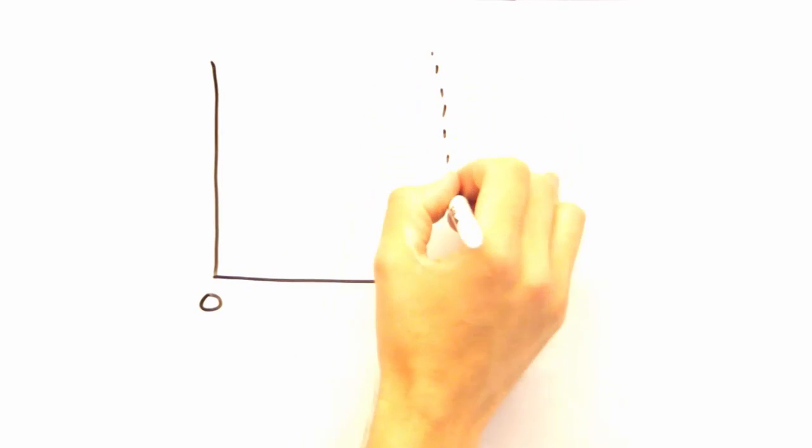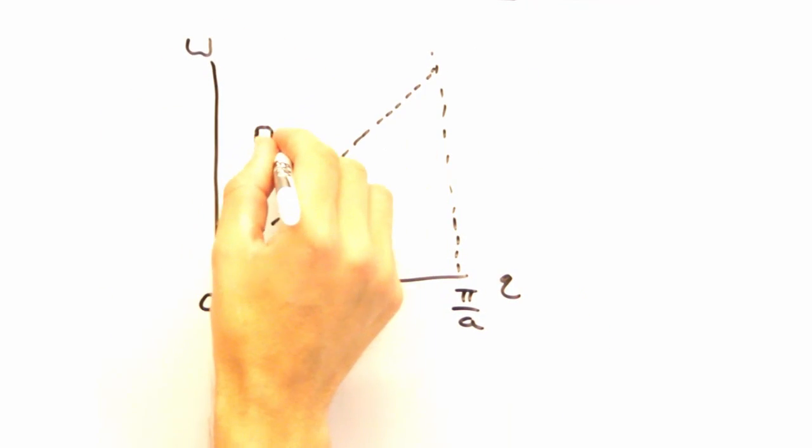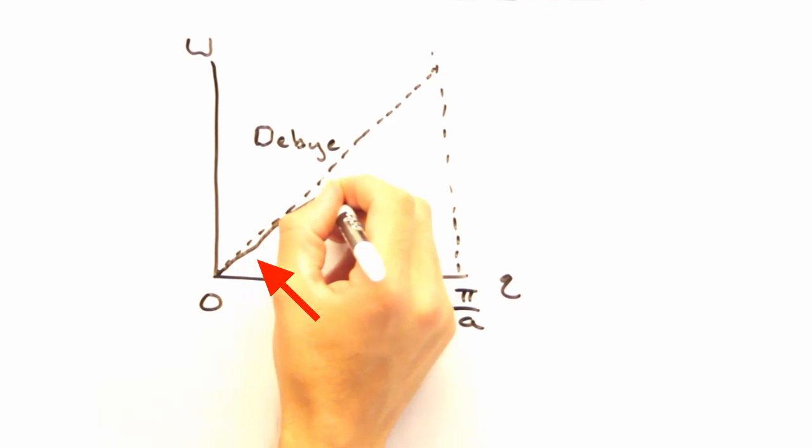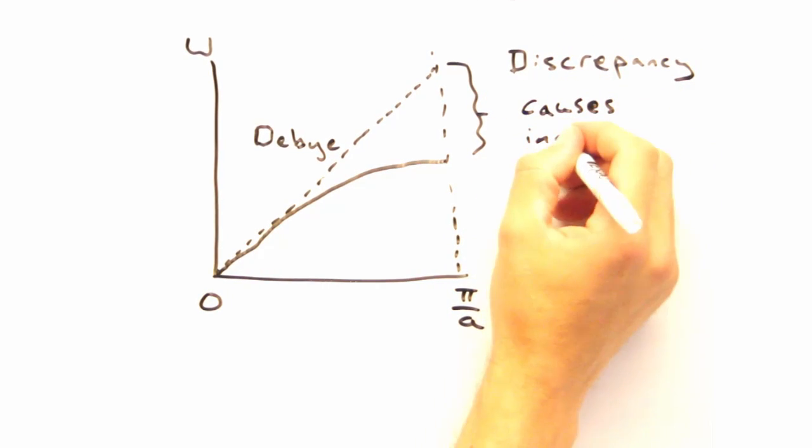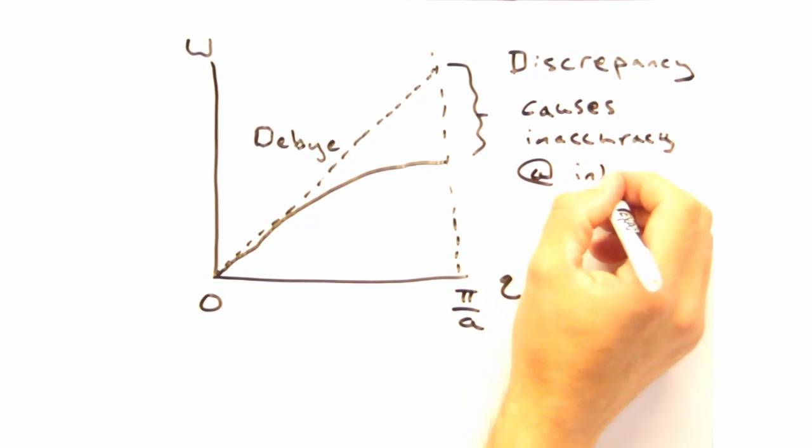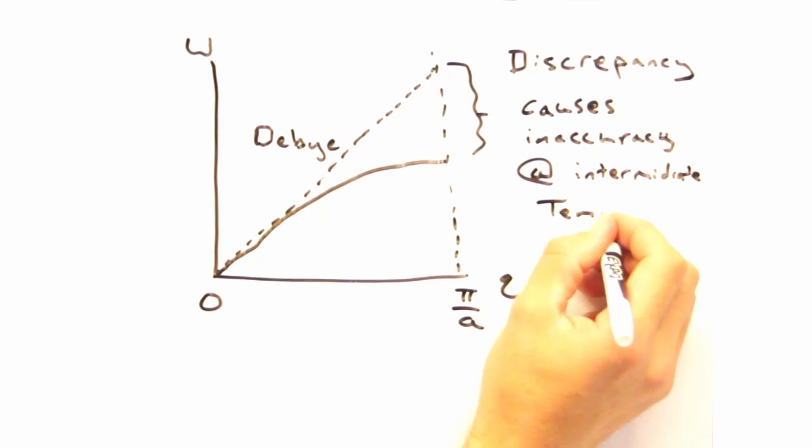The Debye model is still sort of creepy. It gets the heat capacity right at low temperature, because we're near the origin of our dispersion, where we can treat a sine wave as a line. But I'd expect it to be less accurate at intermediate temperatures, where we've started to sample the upper parts of the dispersion.